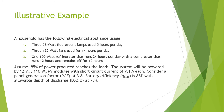This is the example of solar photovoltaic power plant design for a household. The electrical appliances are: three 28-watt fluorescent lamps used 5 hours per day; three 120-watt fans used 14 hours per day; and one refrigerator rated 150 watts running 24 hours per day, with its compressor running approximately 12 hours per day and off for the remaining 12 hours.